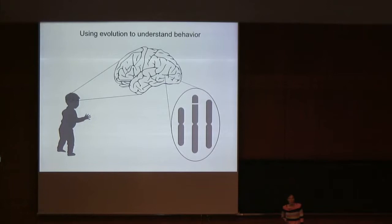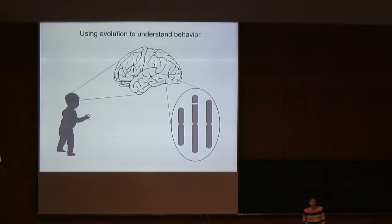For example, how do genes specify the structure and activity of neural circuits in the brain, and how do these circuits generate appropriate and adaptive behavioral responses to sensory information?